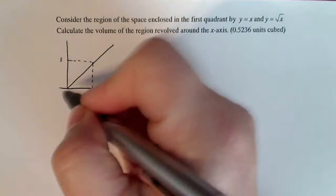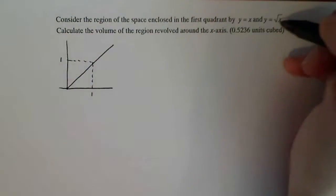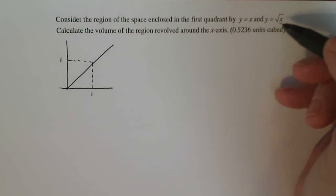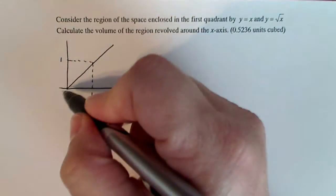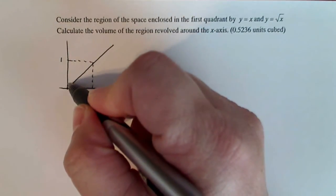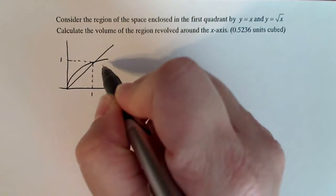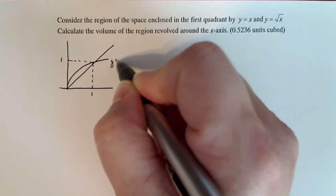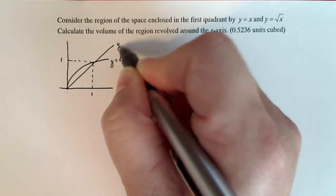With the square root of x, I know it goes through zero, zero, because if I plug in zero for x, I get out zero for y. If I plug in one for x, I get one out for y, so it goes to this point but it looks like a curve. So this is y equals square root of x, and y equals x.